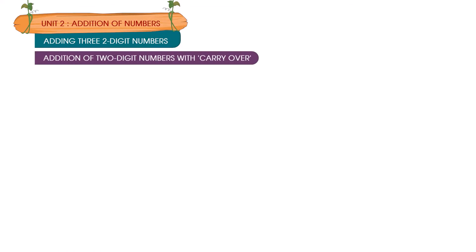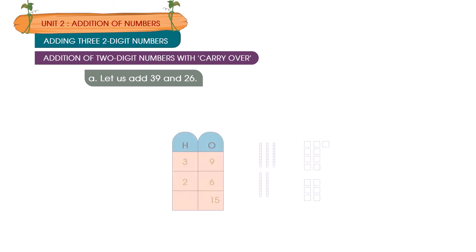Addition of two-digit numbers with carryover. Let us add 39 and 26. Step 1: First add the ones.